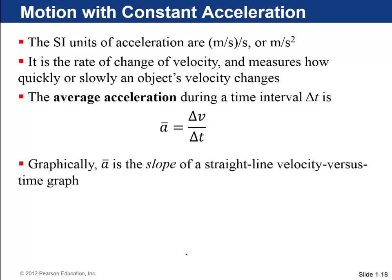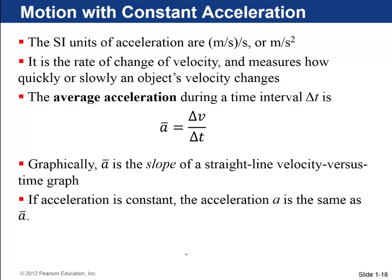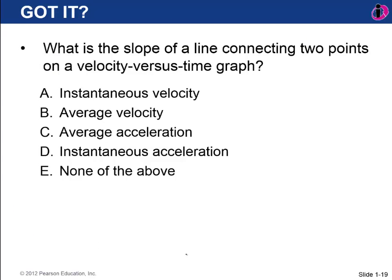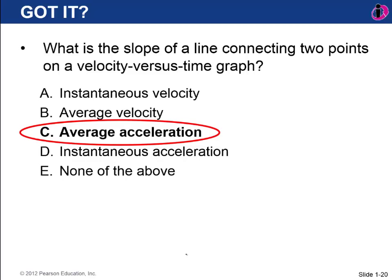Graphically, average acceleration is the slope of a straight line on a velocity versus time graph. If acceleration is constant, the instantaneous acceleration equals the average acceleration. Acceleration, like velocity, is a vector quantity with both magnitude and direction. Question: what is the slope of a line connecting two points on a velocity versus time graph? The answer is the average acceleration. Even if the v-t graph is curved, taking two points and dividing change in velocity by time gives average acceleration.